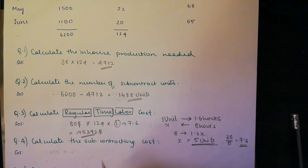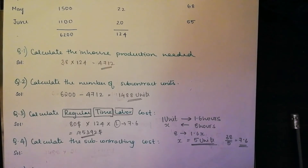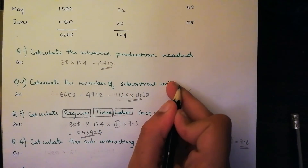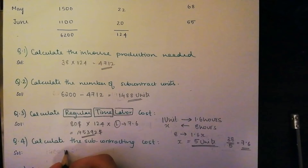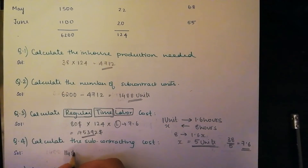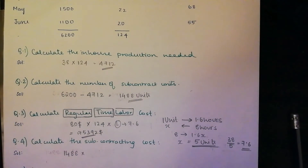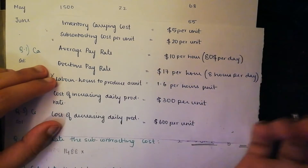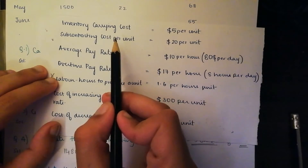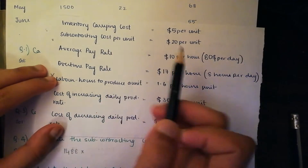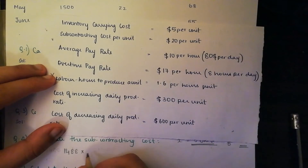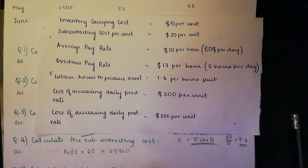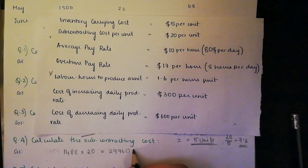Now to calculate the subcontracting cost — this is the easy part. We found earlier that our subcontract units is 1,488. Looking at our data sheet, the subcontracting cost per unit is $20. So 1,488 multiplied by 20 gives us $29,760.